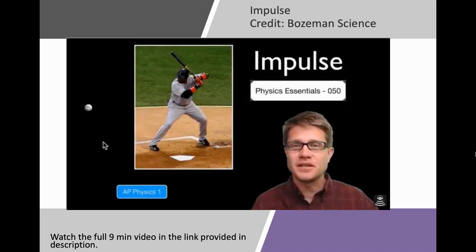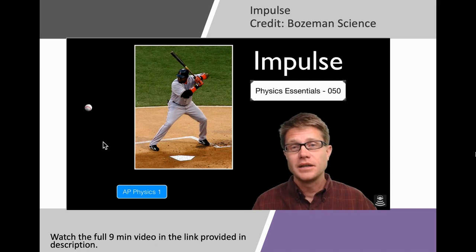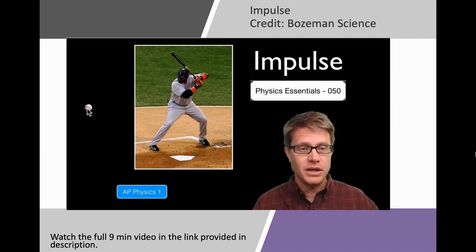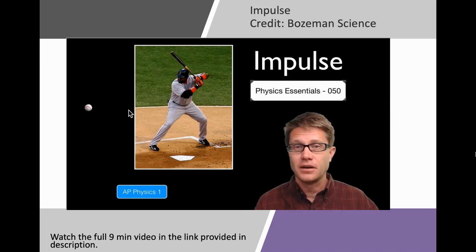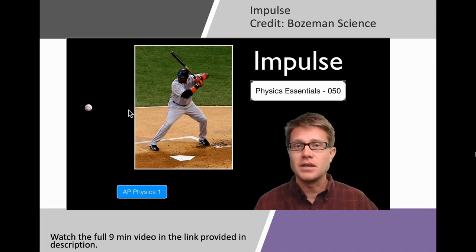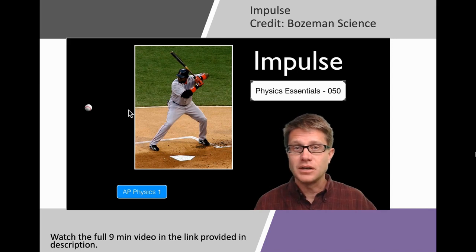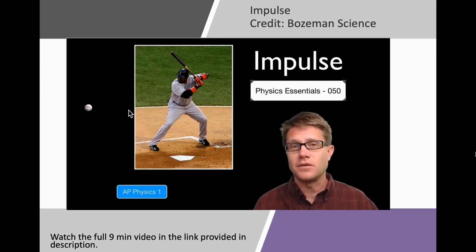Hi, it's Mr. Anderson, and this is AP Physics Essentials video 50, on impulse — simply the product of the force being applied times the time over which that force is being applied. Imagine a baseball moving from left toward the batter. He hits it — the momentum changes dramatically, going in the opposite direction. What's causing that is the impulse: the bat is applying a force over a given period of time. The change in momentum and the impulse are equivalent — they always give you the same value.